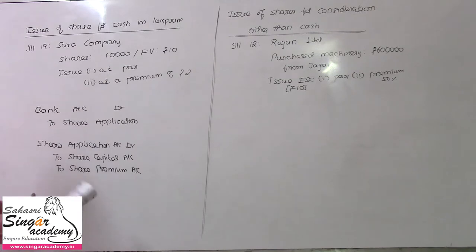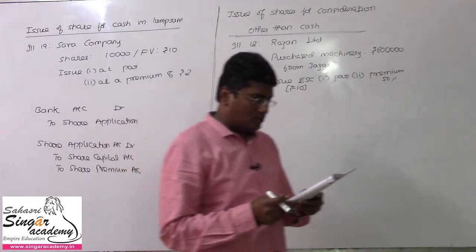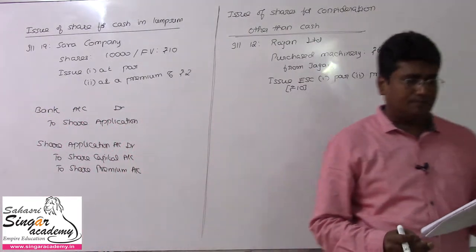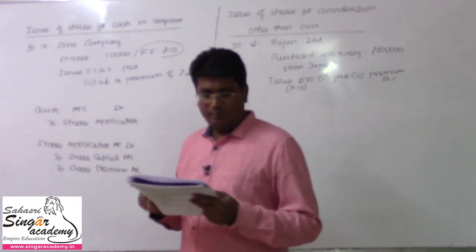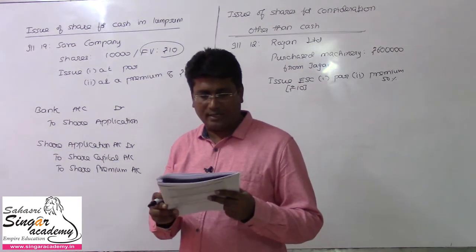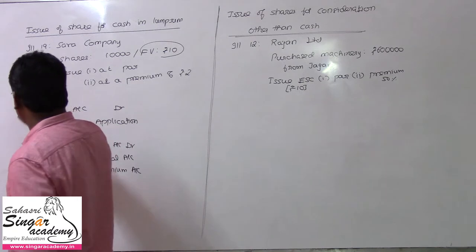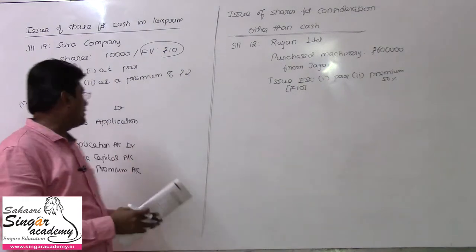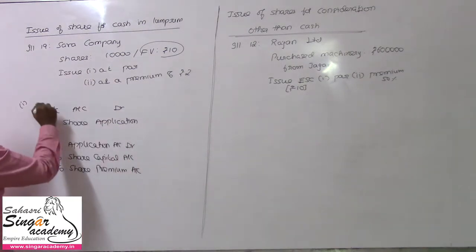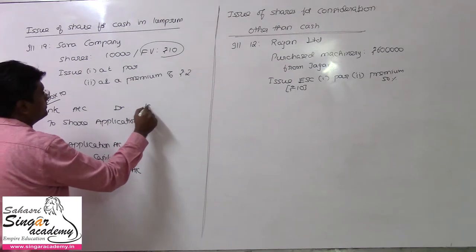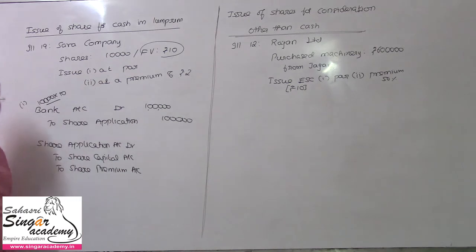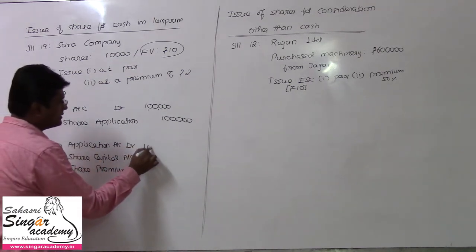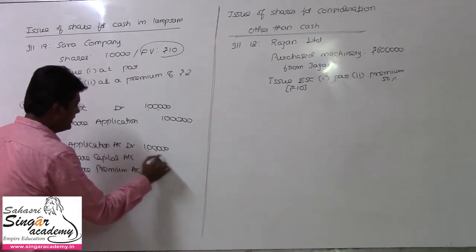Let's see illustration number 19. Sara Company issued 10,000 equity shares of rupees 10 each, payable fully on application. If the shares are issued at par — that is the first subdivision — 10,000 shares into 10 rupees equals 1 lakh rupees received. As allotment is confirmed, you transfer this money to share capital.